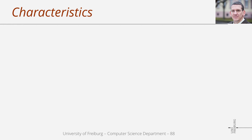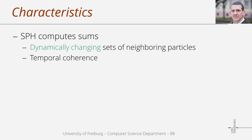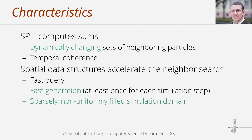So what are the requirements of an efficient data structure for the neighbor search? In SPH approximations, we compute sums over neighbors and these neighbors dynamically change in each simulation step. On the other hand, there is also some temporal coherence — according to the CFL condition, particles should not move too far within one simulation step, so changes in the neighborhood of a particle might be small. Spatial data structures must allow for fast queries, but it is also particularly important that they can be efficiently constructed, as construction is required in each simulation step. Finally, the data structures should be able to handle sparsely and non-uniformly filled simulation domains.